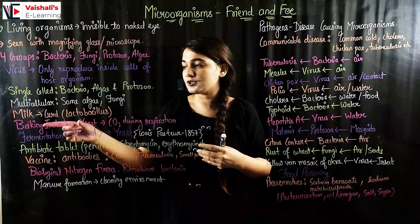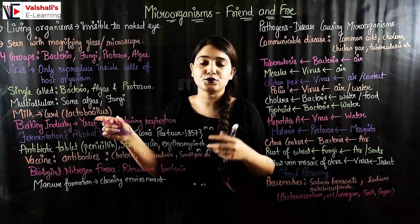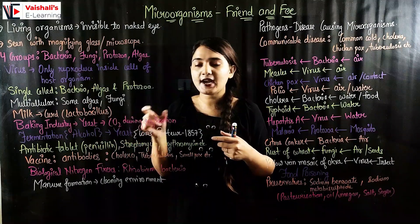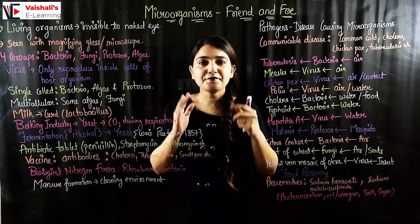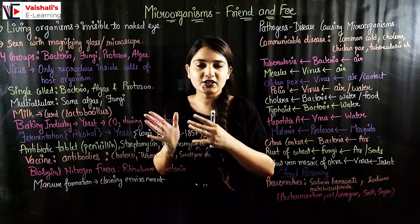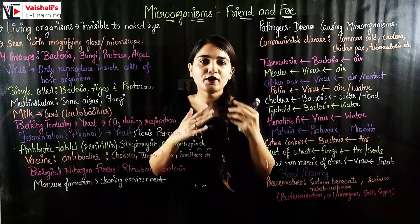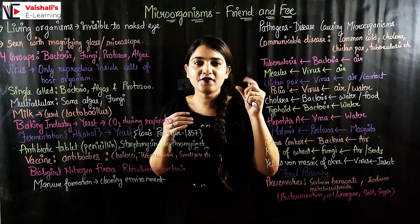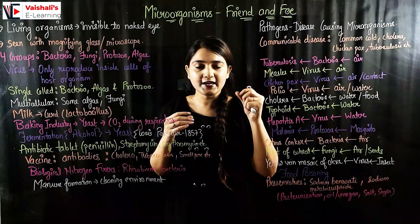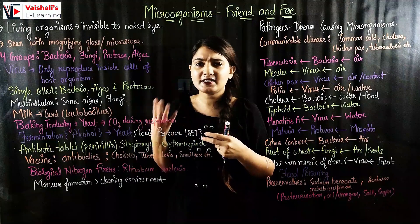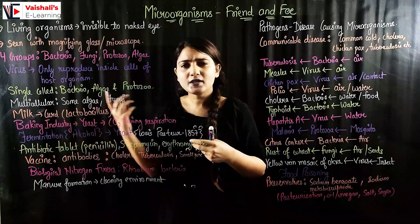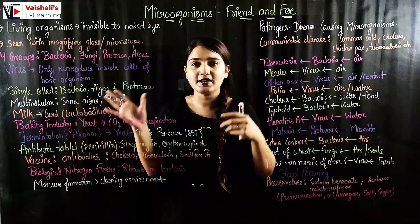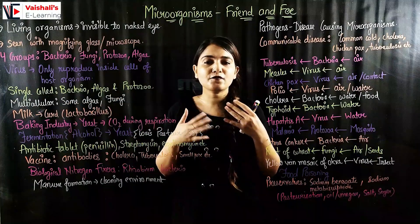In the baking industry, yeast is used. Yeast produces carbon dioxide during respiration. We provide suitable conditions for yeast to reproduce, and it produces CO2, which gives us fluffy breads. It is used in the making of cakes, breads, pastries, and so on.